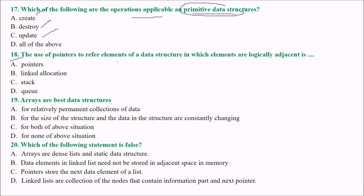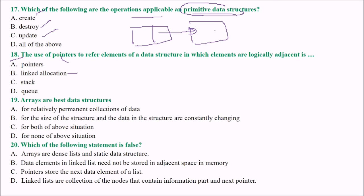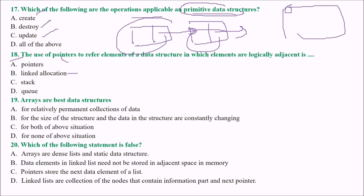The use of pointers to refer to elements of a data structure in which elements are logically adjacent is called linked allocation, also known as a linked list. In a linked list, each element is logically adjacent — this pointer points to the next node, and that points to the next. The nodes may be stored in different memory locations, but they are logically linked to one another.